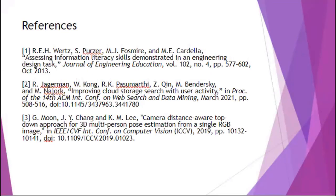This is what your references at the end of your paper would look like. Your citations are listed in number order, not in alphabetical order. Many other citation styles you may have used in the past list authors alphabetically, but in IEEE format they use number order as they appear in your paper.